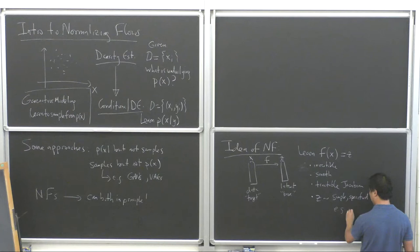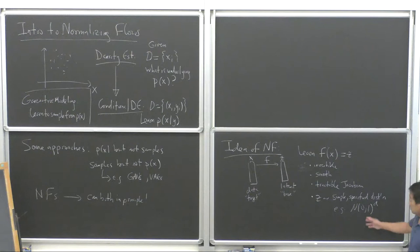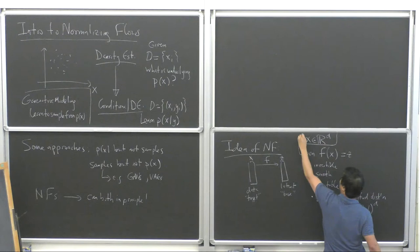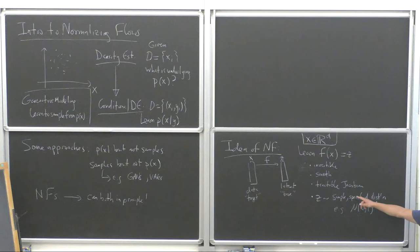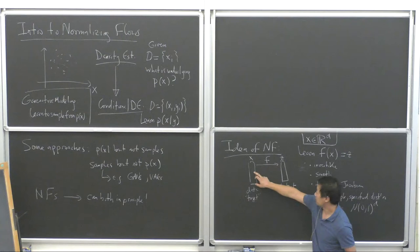For example, we'll mostly assume the base distribution follows the unit normal distribution. Let's say X is D-dimensional. The normalizing flow aims to learn this map F from the data space to the latent space, such that it maps the complicated data distribution to just a simple distribution we specify in advance, like the unit normal.